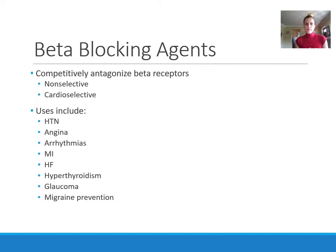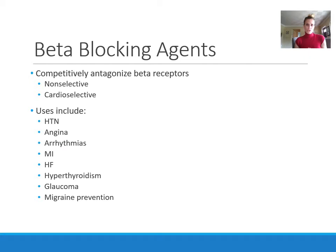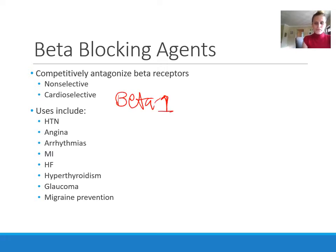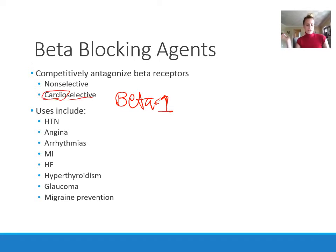Now let's talk about beta blockers. Beta blockers competitively antagonize beta receptors — they bind to beta receptors and prevent agonist binding, thus preventing activation. Beta blockers can be non-selective, antagonizing both beta-1 and beta-2 receptors, or selective, blocking only beta-1 receptors. Because beta-1 receptors are found on the heart, selective agents are often referred to as cardioselective.